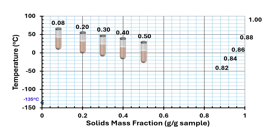First, we prepared samples with different moisture content up to 0.5 grams solids per gram sample and measured their freezing point temperatures. These are shown in the plot of temperature versus solid content. Then the eutectic point — that is, solute crystallization — was measured and shown in the plot. Second, we prepared samples with different moisture content from 0.82 to 1 gram solids per gram sample and measured their glass transition temperatures, also shown in the plot of temperature versus solid content.